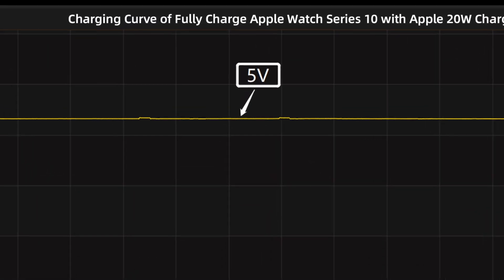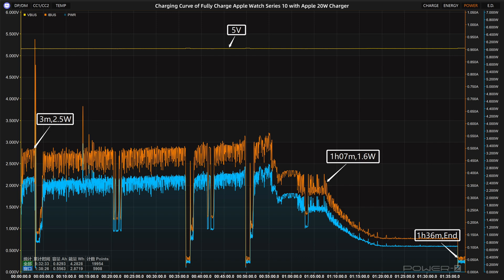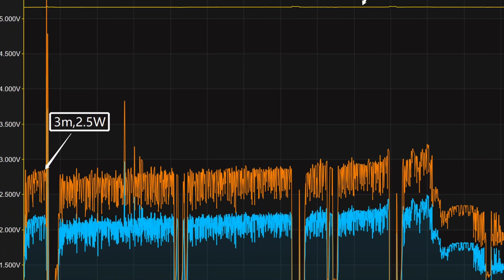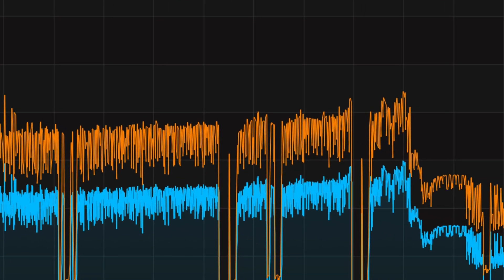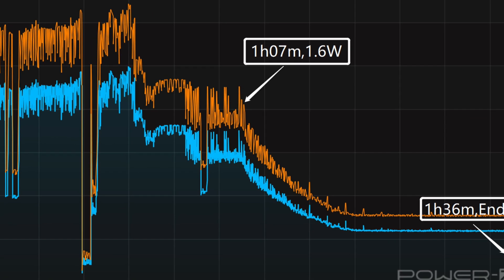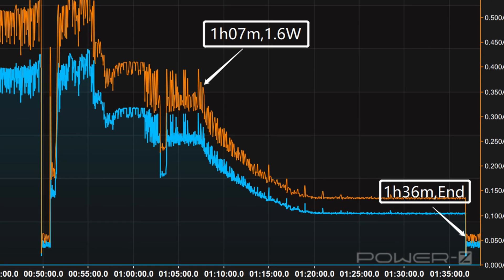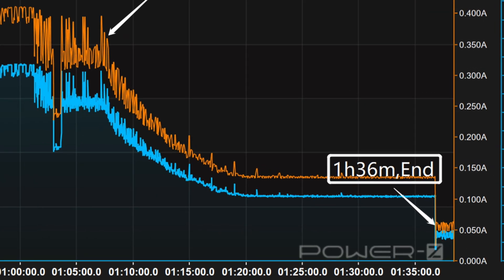The voltage is always around 5 volts. The charging curve can be divided into 3 parts. In the first part, the peak power stayed at 2.5 watts for the first 3 minutes. After that, the power kept fluctuating up and down for a period of time, until 1 hour and 7 minutes, the power dropped to 1.6 watts and began to decrease steadily. It takes 1 hour and 36 minutes to be fully charged.